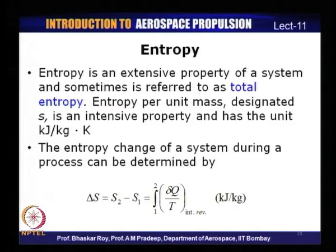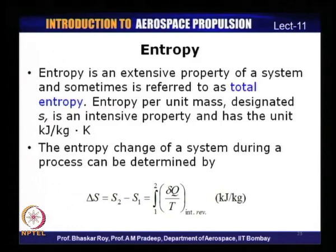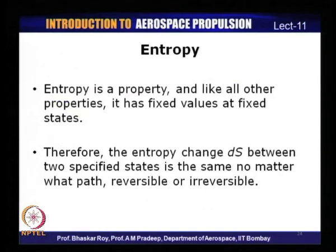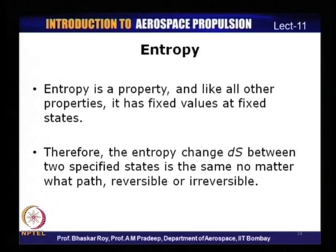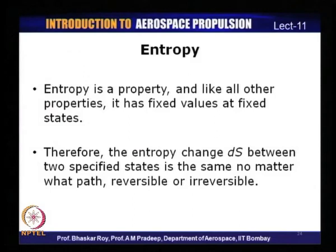Entropy is an extensive property, denoted by capital S, with units of kJ/K. Entropy per unit mass, denoted by small s, is an intensive property with units of kJ/(kg·K). Since entropy is a property of a system, entropy change between two specified states is the same irrespective of what path is taken — whether reversible or irreversible — because it depends only on the end states. For actual or irreversible processes, entropy will be greater than the integral of dq/T — we shall look at that in detail in the next lecture.